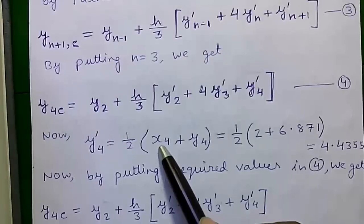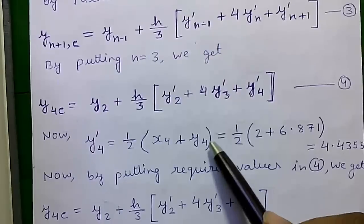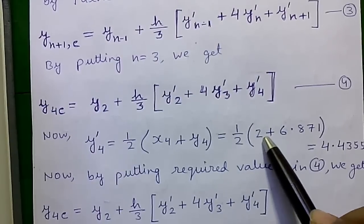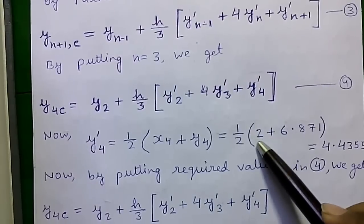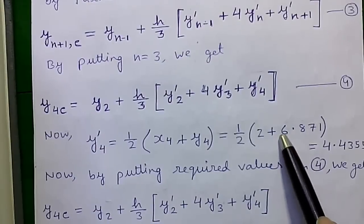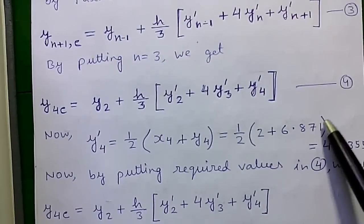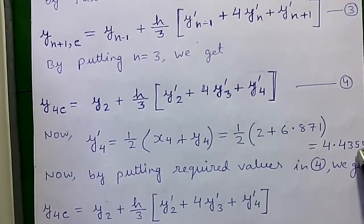By same process we will calculate it by putting x(4) and y(4) value. So 1/2 times (x(4) value is our x value which we have to find out for and our y(4) value we just calculated that is 6.871). So it will become 4.4355.